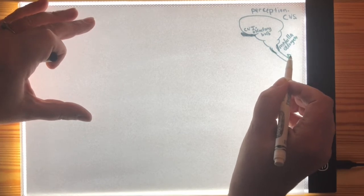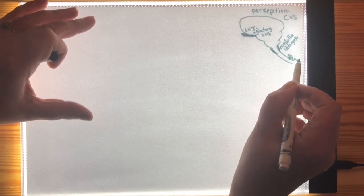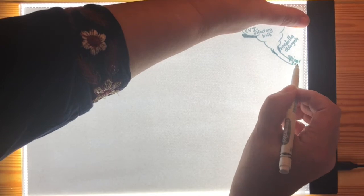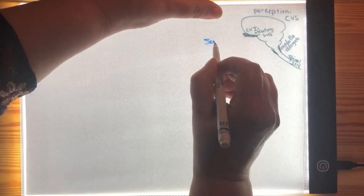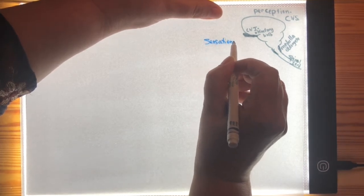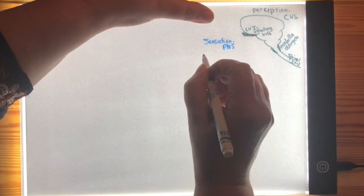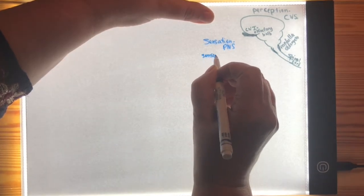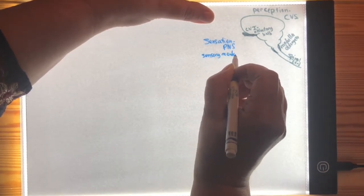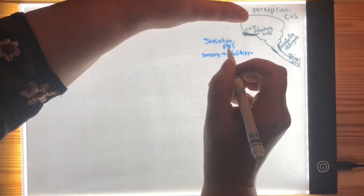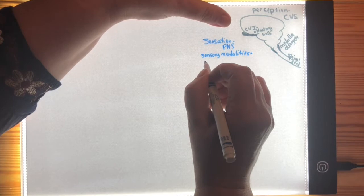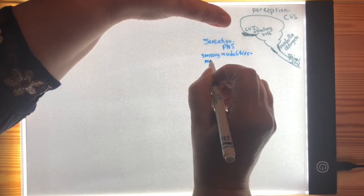Lastly we have the spinal cord. Generally speaking, when we touch something, that information is communicated to the spinal cord — those are the structures of the central nervous system involved in perception. Now sensation is going to be occurring in the peripheral nervous system. Sensation is awareness of stimuli and changes in the internal and external environment. Perception, which happens in the brain, is where we interpret those stimuli.